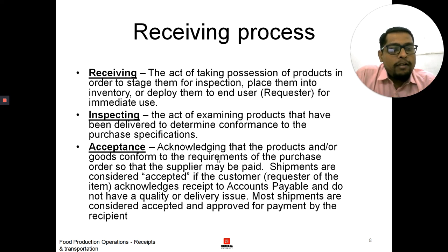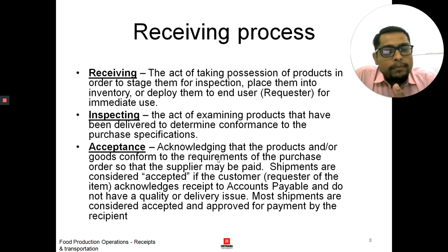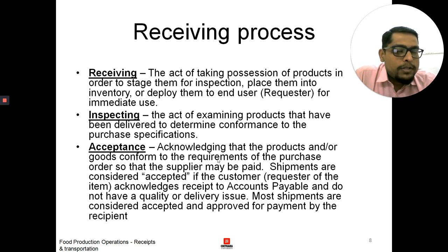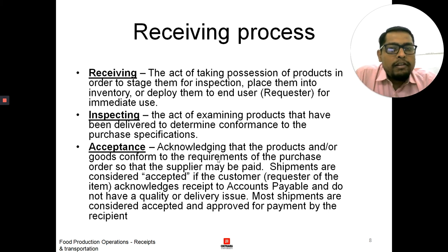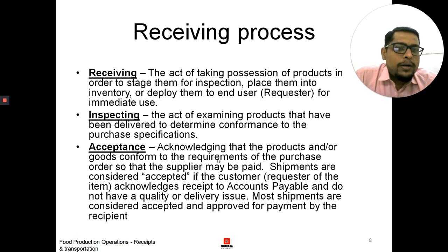Whenever we receive food products, the first thing is we take physical possession of them. We inspect them — if it is up to our quality and standard purchase specification, we keep it; if not, we return it. When we keep it, we place it in our inventory — either a chiller, glass filler, or deep freezer — or we will directly send it to the concerned department or outlet for their consumption.